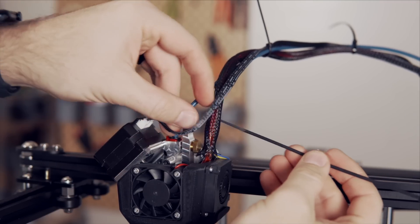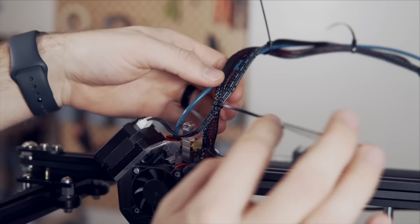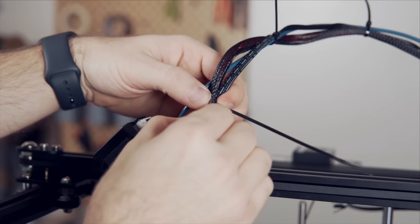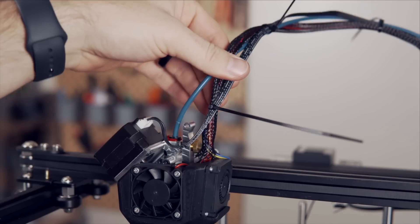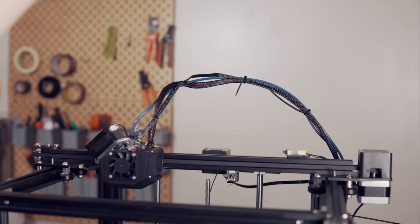Make sure that you give the extruder motor some slack. I tighten it around the rest of the wires so that way, if there is any pull, it's not going to be pulling the plug at the stepper motor. That is really important to prevent any possible damage.